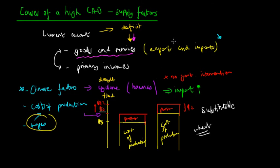Our wheat has become less internationally competitive in the global market. At the same time, because domestic wheat is so expensive, we're going to import more from New Zealand because it's cheaper. When exports decrease and imports increase, net exports decrease, and therefore the balance on goods and services also decreases, and the current account will fall into deficit. Those are the primary supply side factors we're familiar with.